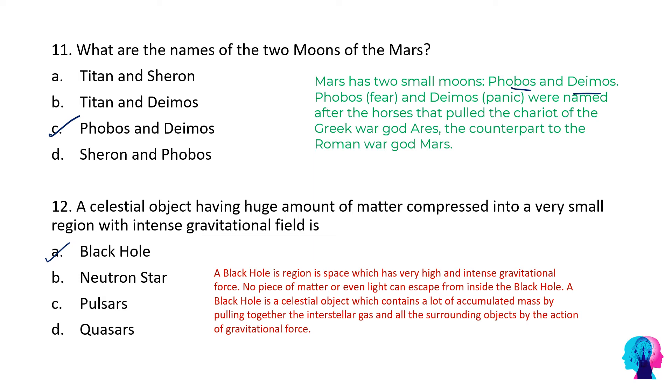If anything goes inside a black hole, it cannot come back because there is such intense gravitational force that pulls it inside. Black hole is a celestial object which has lot of accumulated mass by pulling together the interstellar gas and all the surrounding objects by the action of gravitational force.